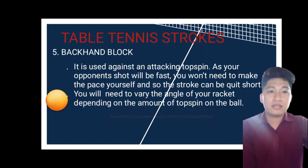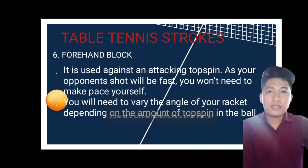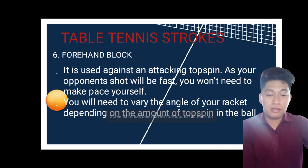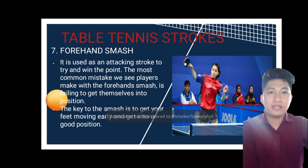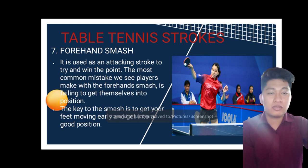The backhand block is used against an attacking topspin — since your opponent's shot provides the pace, you won't need to make it yourself; you will need to vary the angle of your racket depending on the ball. The forehand block works similarly. Finally, the forehand smash is used as an attacking stroke to try and win the point. The most common mistake players make with the forehand smash is failing to get into position — the key is to get your feet moving early and get into a good position.